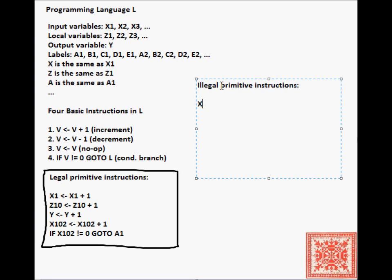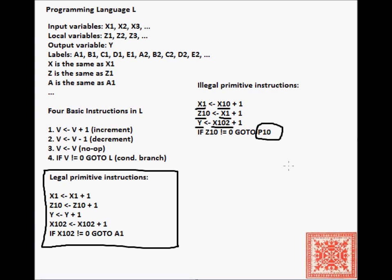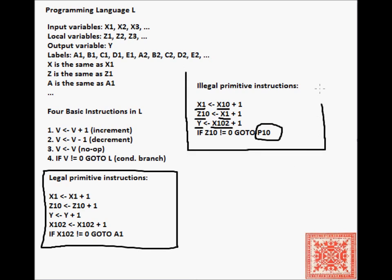Here's an example of illegal primitive instructions: X1 arrow X10 plus 1 - different variable on the left-hand side from the variable on the right-hand side. Z10 arrow X1 plus 1, Y arrow X102 plus 1 - these are illegal primitive instructions, again different variables. If Z10 is not equal to 0 go to P10 - P10 is an illegal label because it has to be A, B, C, D, or E with some subscript.